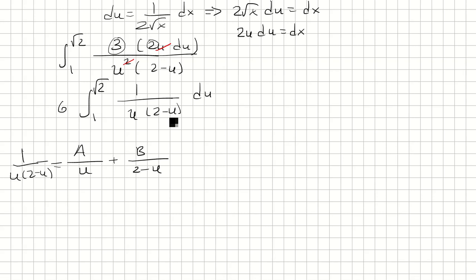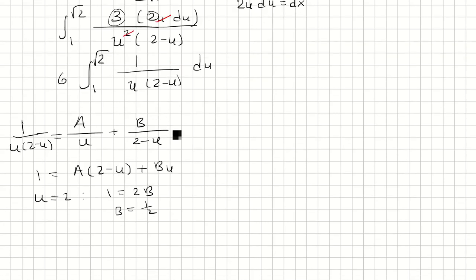Multiply both sides by u times 2 minus u. If we let u equal 2, that means 1 is equal to 2B, which means B is a half. If u equals 0, I have 1 is equal to 2A, so A is also a half.